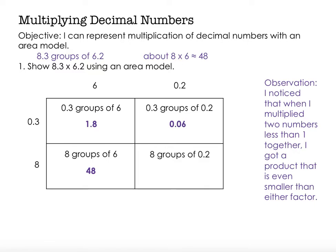Okay, lastly, I have 8 groups of 2 tenths. So I'm going to have 8 times 2 tenths, or 2 tenths, 4 tenths, 6 tenths, 8 tenths, 12 tenths, 14 tenths, 16 tenths. So 16 tenths is the same thing as 1 and 6 tenths.